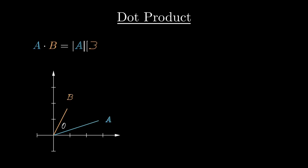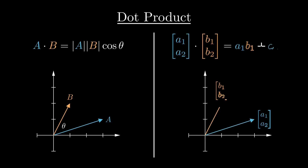The dot product of two vectors a and b is equal to the magnitude of a times the magnitude of b times the cosine of the angle between them. It can be thought of as a measure of how aligned two vectors are in n-dimensional space. To calculate it, we take the sum of each component of vector a multiplied by the corresponding component of vector b.